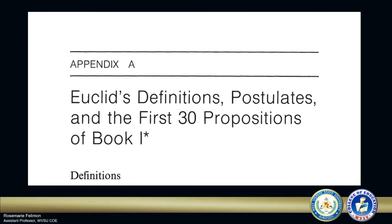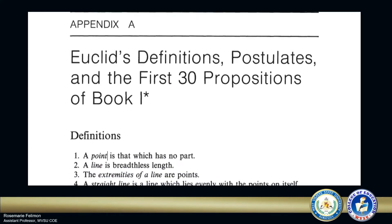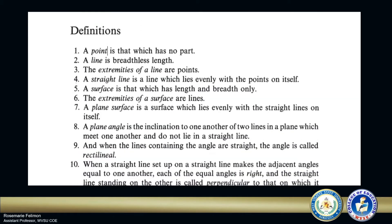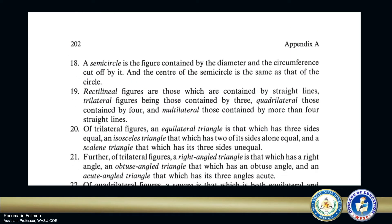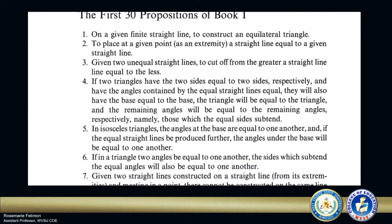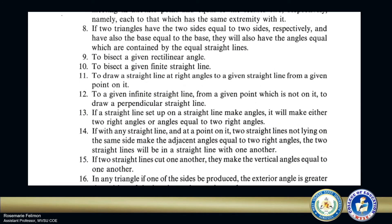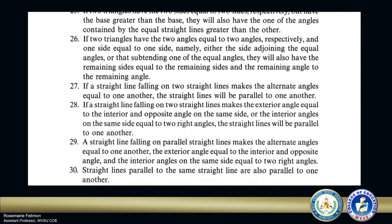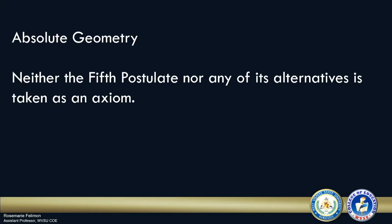It is important to recall Euclid's definitions, postulates, and the first 30 propositions that can be found in Euclid's first book. Specifically, two propositions from Book 1 will be used for the proof of the equivalence of Euclid's 5th Postulate and Playfair's Version. These two propositions must be within the bounds of absolute geometry. In this geometry, neither the 5th postulate nor any of its alternatives is taken as an axiom. In fact, the first 28 propositions of the first book belong to absolute geometry.